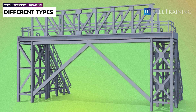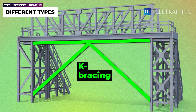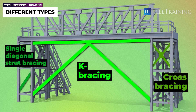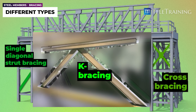The most common types of bracing are K-bracing, cross-bracing, and single-diagonal strut braces. K-bracing is less common than cross-bracing and single struts, but we'll examine it first because it's more straightforward. Understanding how K-bracing works will provide a foundation for comprehending how bracing functions in general.